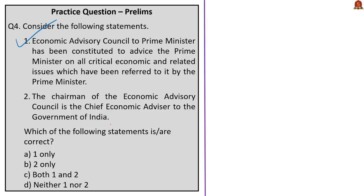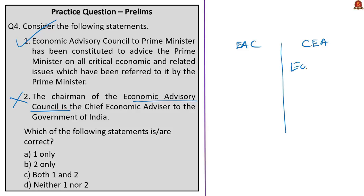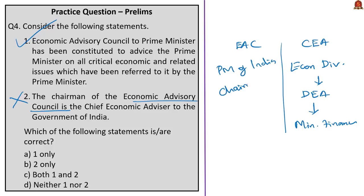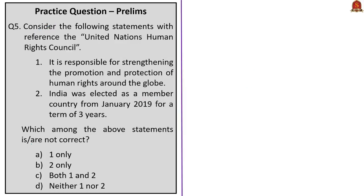The second statement: the chairman of the Economic Advisory Council is the Chief Economic Advisor to the Government of India. This statement is wrong because the chairman of the Economic Advisory Council is different from the Chief Economic Advisor. The Chief Economic Advisor heads the economic division of the Department of Economic Affairs under the Ministry of Finance. The Economic Advisory Council has a separate chairman. So the correct answer is option A: one only.